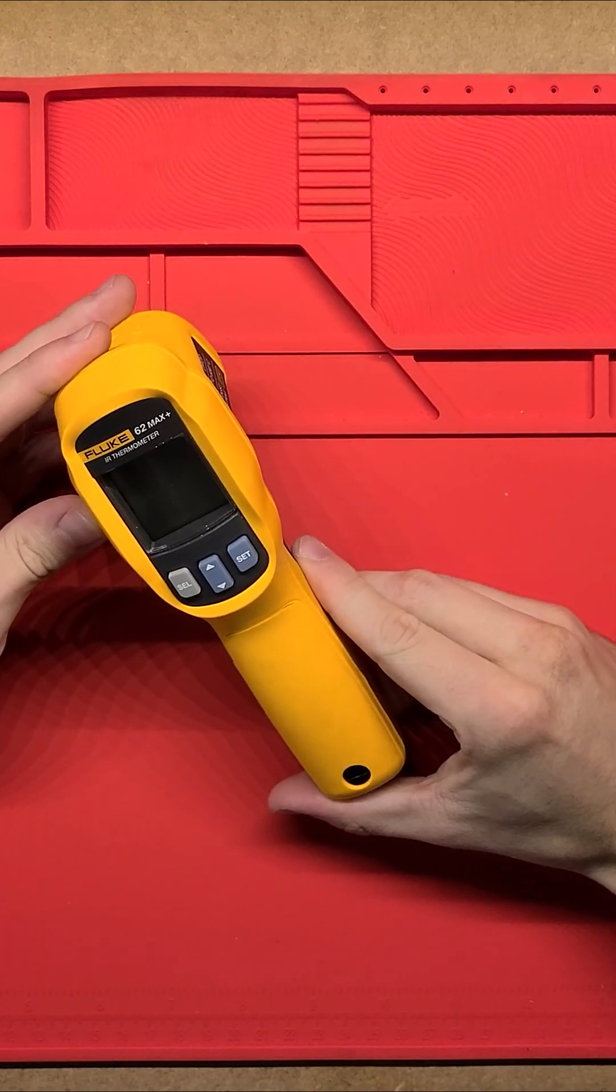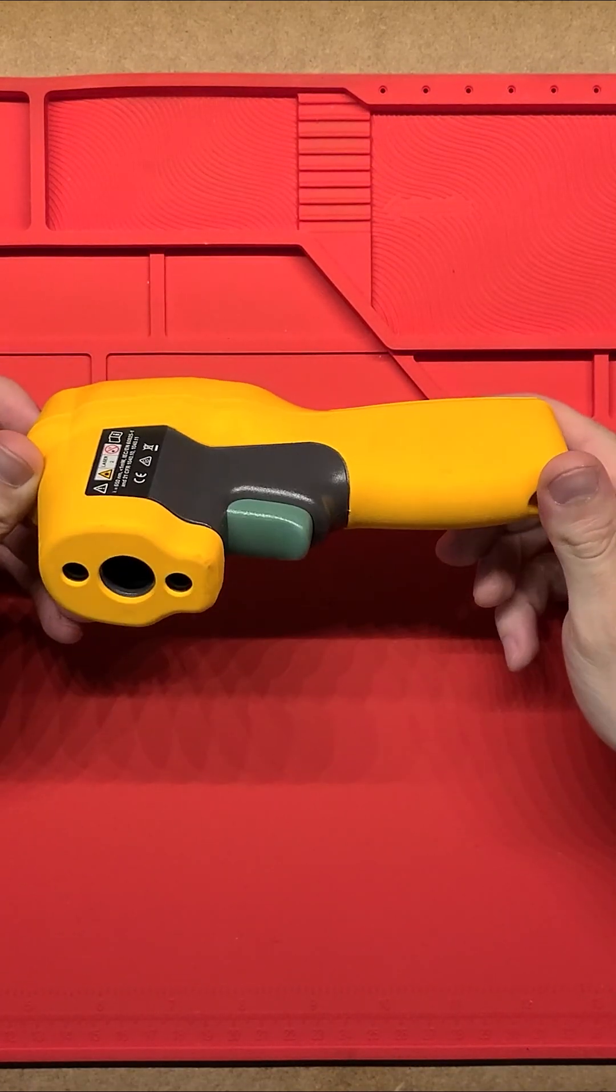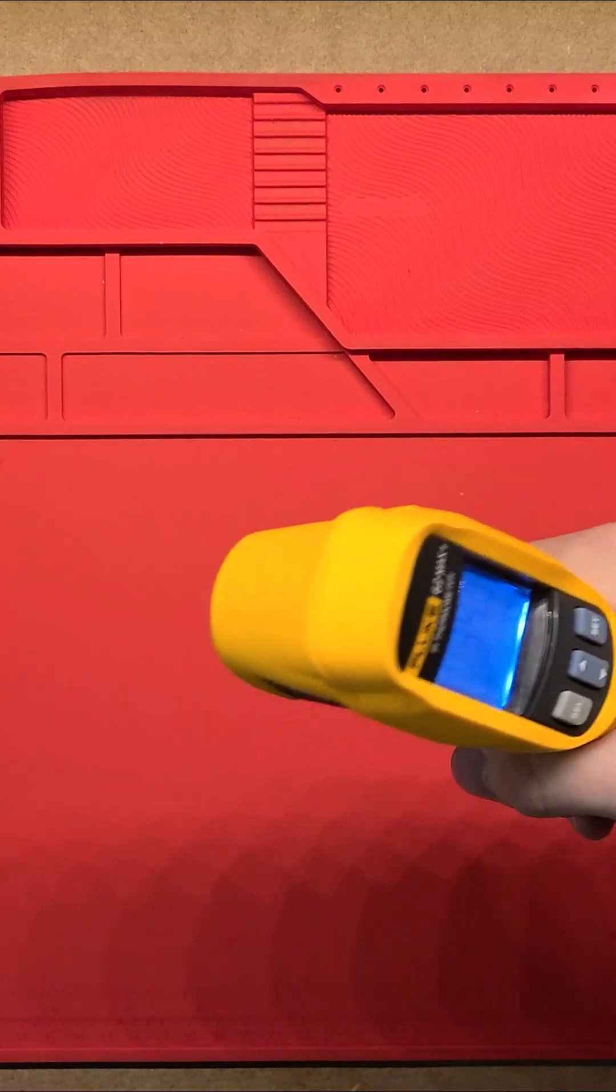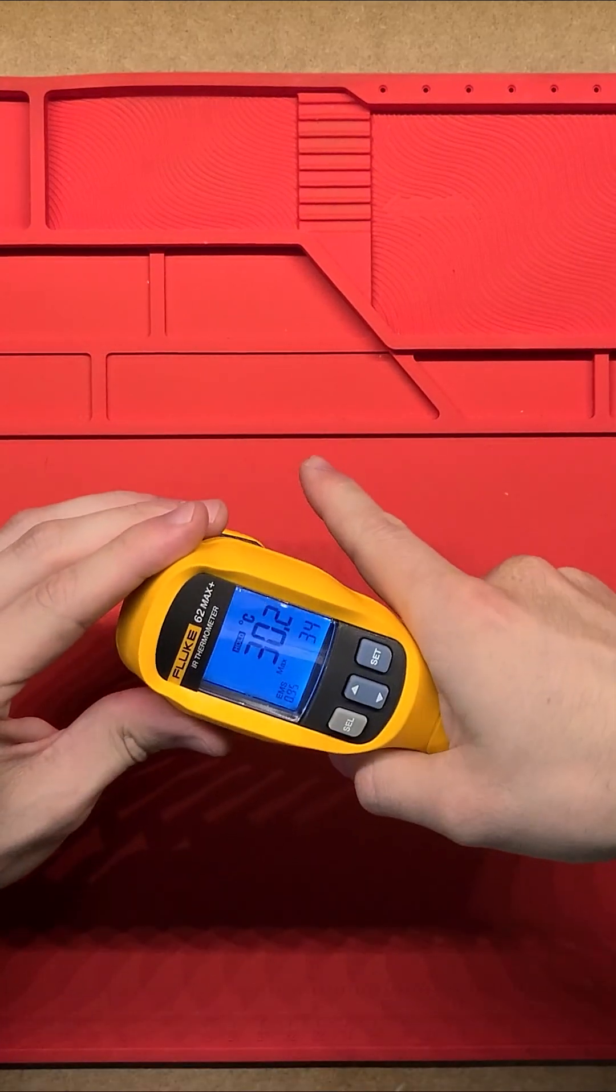Let's have a look at what's inside a Fluke 62 Max Plus infrared thermometer. Really nice grip, two laser pointers show you the center of where it takes the temperature.